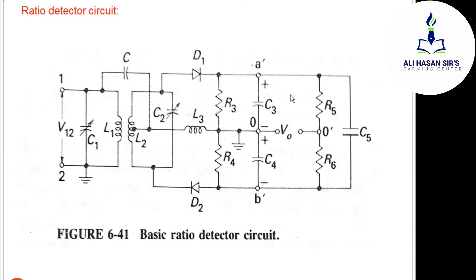So if you use the ratio detector circuit in the FM receiver block diagram, you do not need to include a separate amplitude limiter block. The ratio detector circuit itself handles amplitude limiting, making the amplitude limiter block unnecessary.